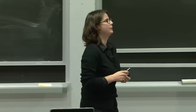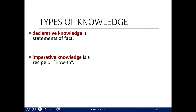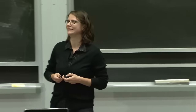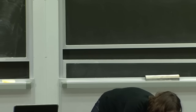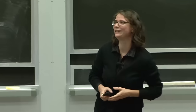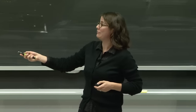There are two types of knowledge. The first is declarative knowledge — statements of fact. For example, someone will win a prize before class ends, and the prize is a Google Cardboard. That's just a statement of fact. But if I'm a machine, I don't know what to do with that statement alone.